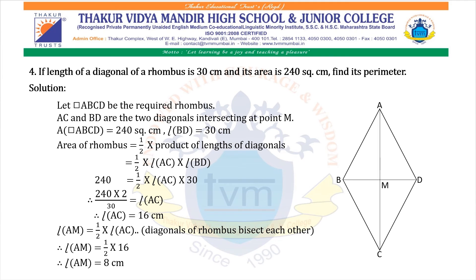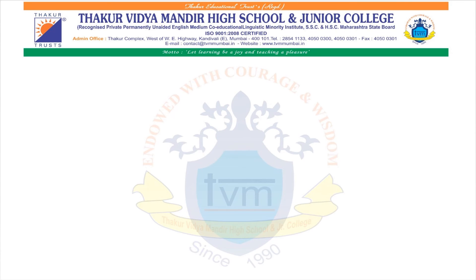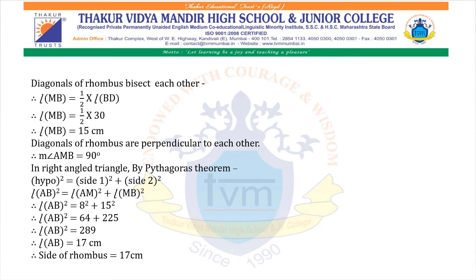Length AM = half into AC because diagonals of a rhombus bisect each other. Therefore, AM = half into 16 = 8 cm. Similarly, MB = half into BD = half into 30 = 15 cm.